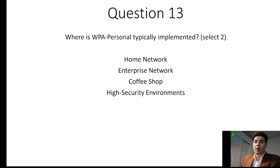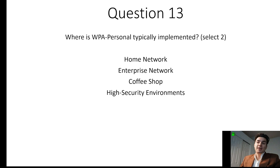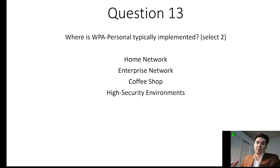Question 13. Where is WPA Personal typically implemented? WPA Personal stands for Wi-Fi Protected Access and you would normally see that for a home network and coffee shops. In your home network you're going to see it has a pre-shared key, meaning everyone uses the same password. In an enterprise environment you would see WPA Enterprise, which uses a RADIUS server for user authentication.